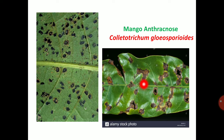It will produce a shot hole symptom. The infected portion falls off and produces the shot hole symptom. Depressed black color spots with the shot hole symptom is a typical symptom of mango anthracnose in leaves.